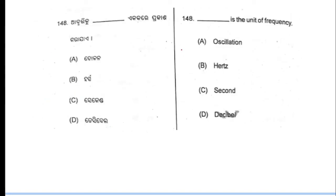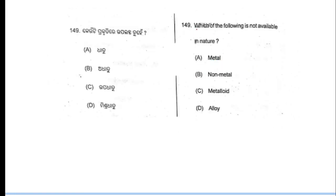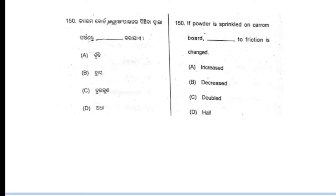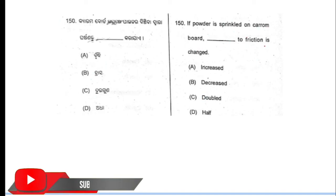Next question, question number 148: what is the unit of frequency? Option number B is the correct answer. Question number 149: which of the following is not available in nature? Question 149, option number D is the correct answer.